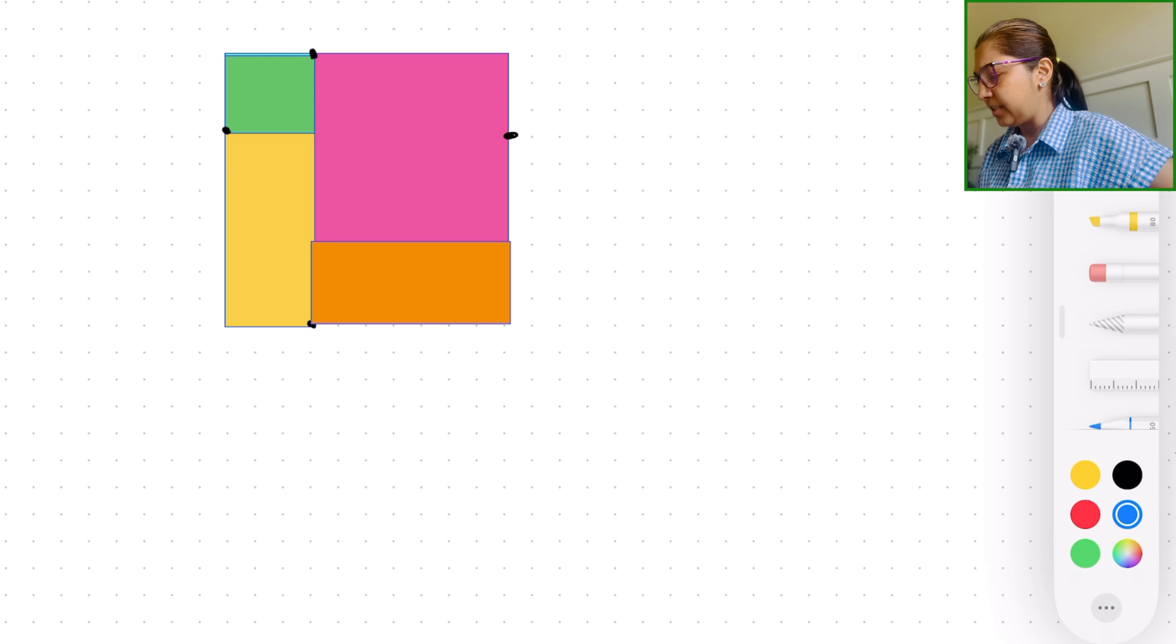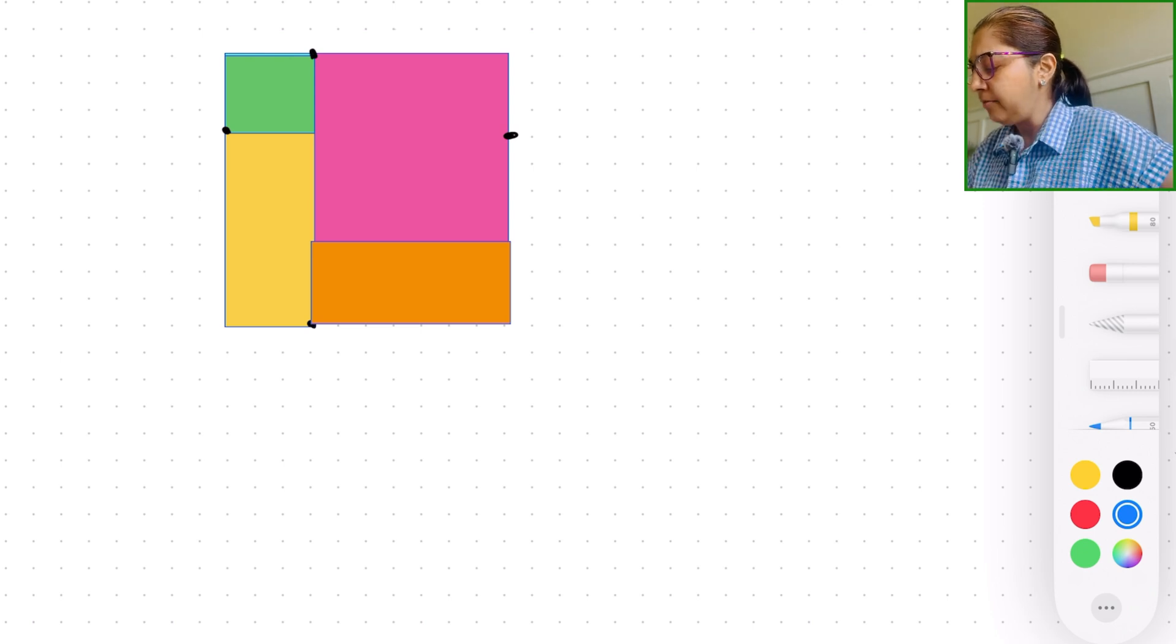So what I'm going to do is, as you can see, I have one big square which I have broken into four small squares and rectangles and we're going to decompose this big square and add the areas of all the small squares and rectangles to see if we get the same area. So let's see.